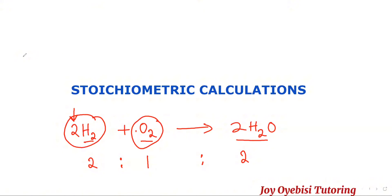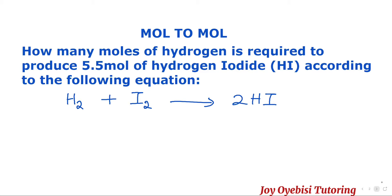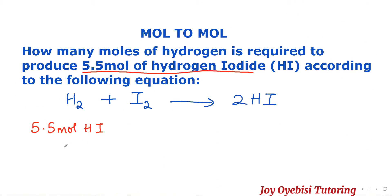The first question asks: how many moles of hydrogen is required to produce 5.5 moles of hydrogen iodide according to the following equation? You are to start with the number of moles they give you — 5.5 moles of hydrogen iodide. Since this is already in moles, you do not need to convert. The next step would be to go from moles of hydrogen iodide to moles of hydrogen. The relationship between these two is a one-to-two ratio.